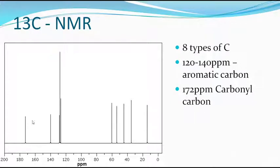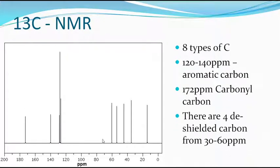There are four deshielded carbons from 30 to 60 PPM. Therefore, they must be connected to electronegative groups. And here also you can see one group which is highly deshielded — that we have to remember.